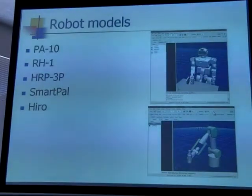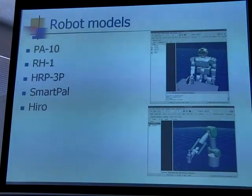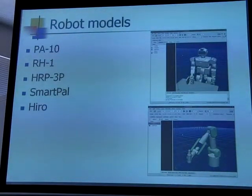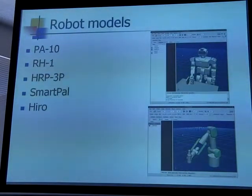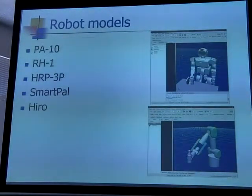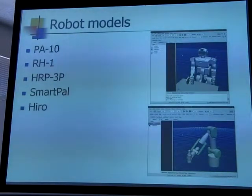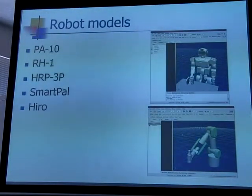We use many kinds of robot models: PA10, different hardware mounts, HRP3P, SmartPAL developed by Yaskawa, and Hiro developed by Kawada. The robot model is described in VRML format for HRP, with additional settings specified using a YAML file.